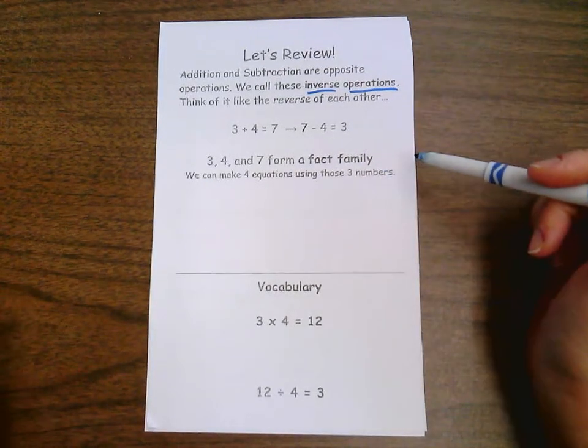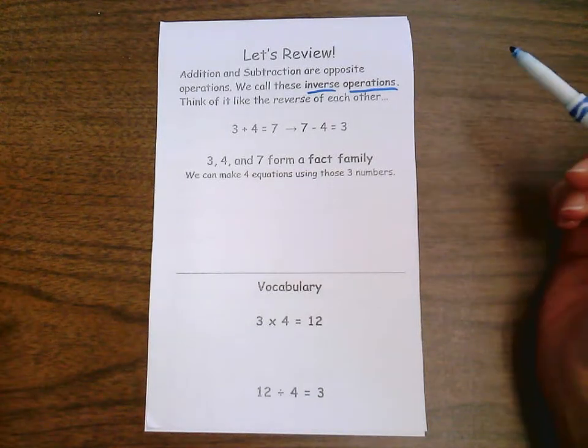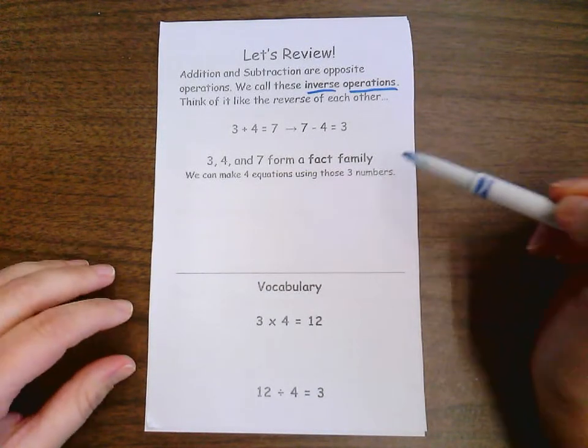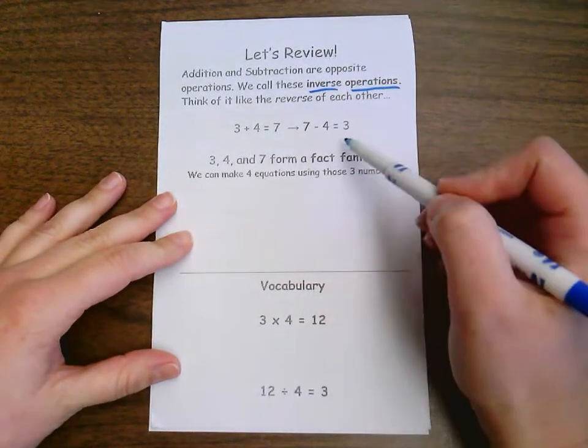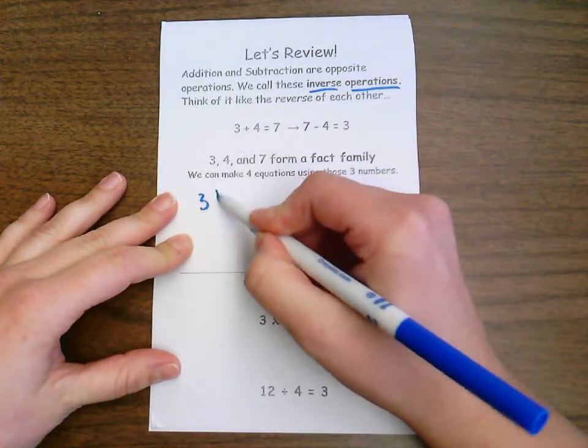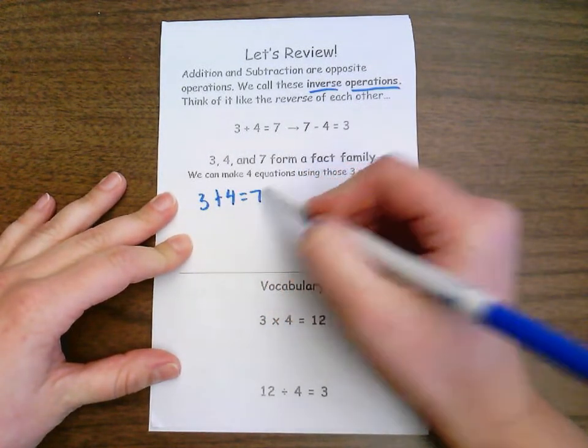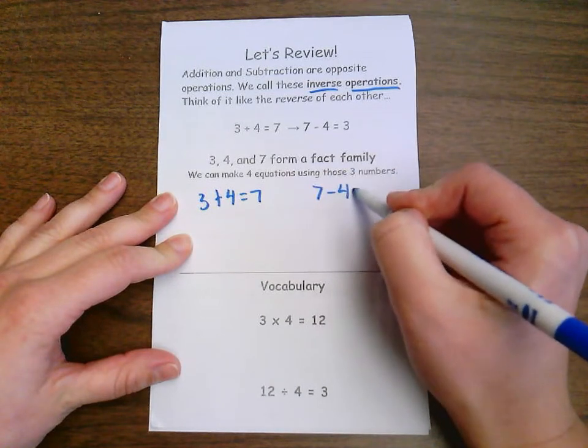Three, four, and seven form what we call a fact family, and we can make four equations using those three numbers. We already have two of them up here. Three plus four equals seven, and seven minus four equals three.